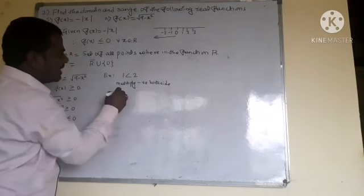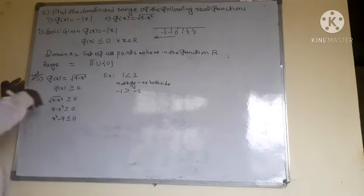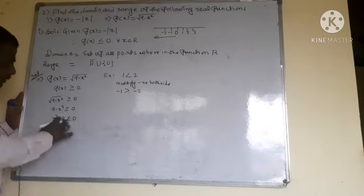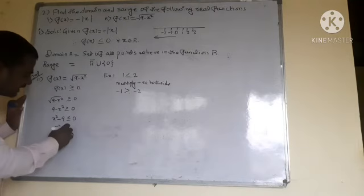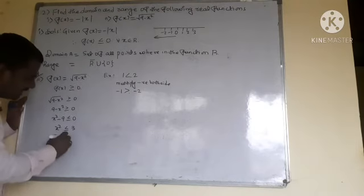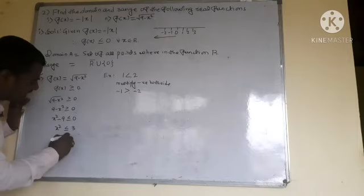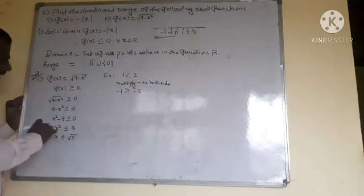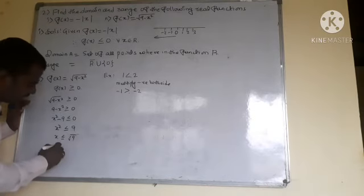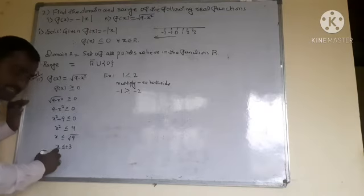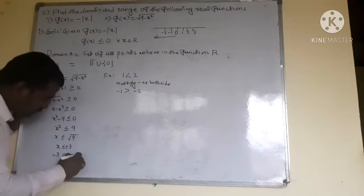From x² ≤ 9, we get x ≤ ±3. Since 9 is there, taking the root gives x = ±3. This expresses as -3 ≤ x ≤ 3. So the domain is the interval from -3 to 3.